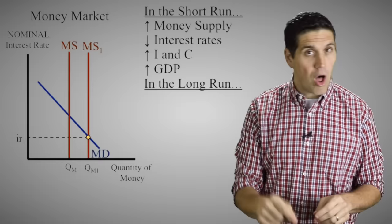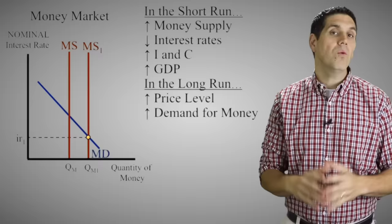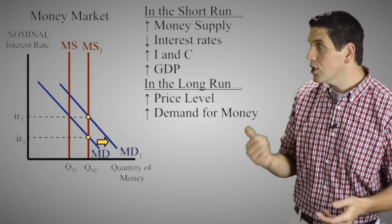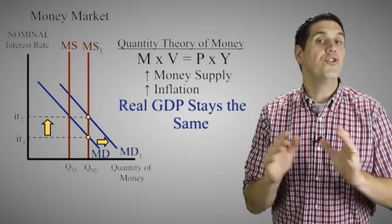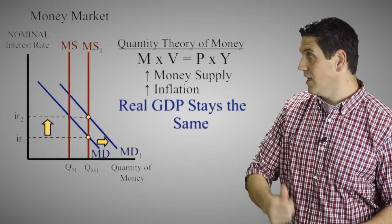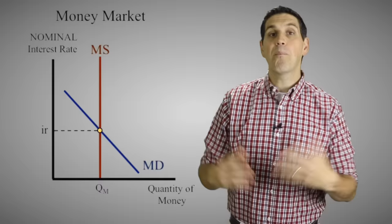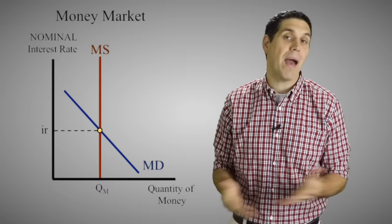But in the long run, an increase in aggregate demand and spending will increase the price level, causing the demand for money to go up. Why? Because if there's inflation — say prices double — you're going to need double the amount of money to pay for transactions. So the increase in demand for money causes the nominal interest rate to go right back to where it was before. Consumer spending and investment both go down, and GDP goes right back to where it started. This is completely in line with the quantity theory of money. This graph is often used to show what's happening in the short run; it's not good at explaining long-run decision making.